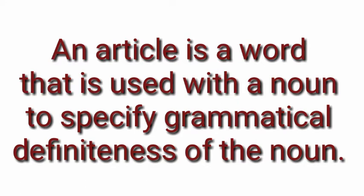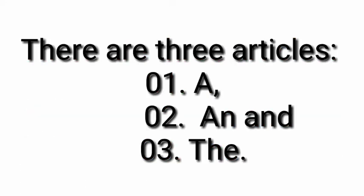I repeat once. What is an article? An article is a word that is used with a noun to specify grammatical definiteness of the noun.